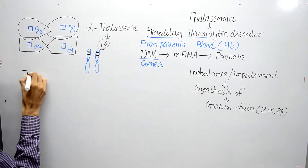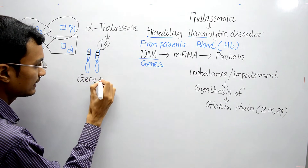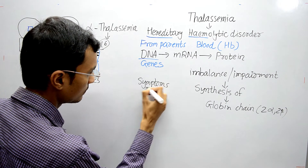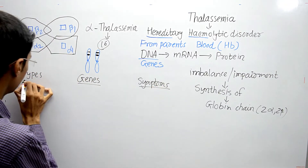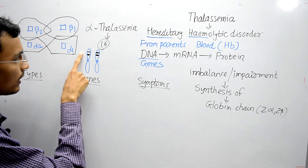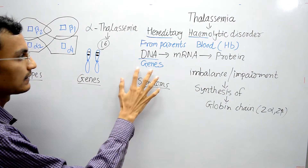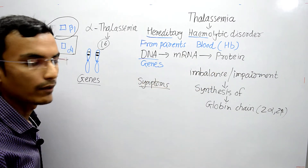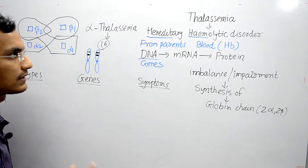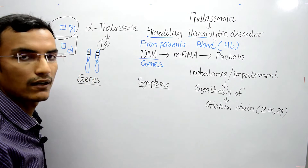Let's see about the types, the genes that are missing, and the symptoms. The first case is normal — all 4 genes are present. The person is not having any kind of disorder if all 4 genes are functional.